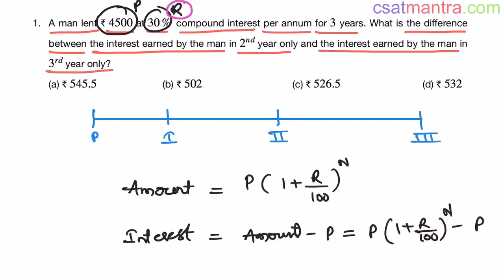At R percent compound interest, principal amount P will become this much after N years, my friends. P into 1 plus R by 100 power N. And for interest over those N years will be, we have to subtract the principal amount from the total amount it became after N years, my friends. That is P into 1 plus R by 100 power N minus P.